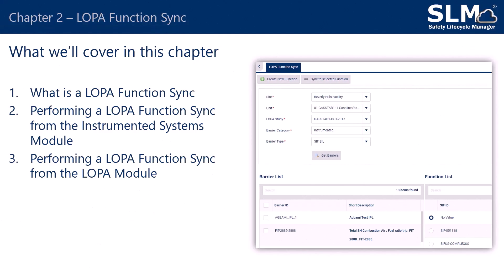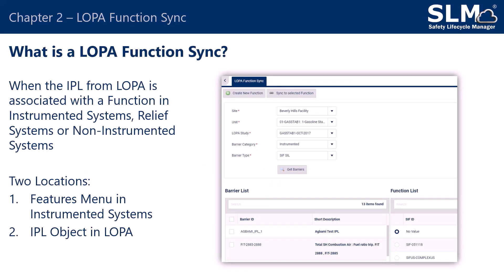In Chapter 2, we will cover what is a LOPA function sync, performing a LOPA function sync from the Instrumented Systems module, and performing a LOPA function sync from the LOPA module. A LOPA function sync is when the IPL from LOPA is associated with a function in Instrumented Systems, Relief Systems, or Non-Instrumented Systems. It is this association of objects that allows for the data from the LOPA module to be shared with the design modules.